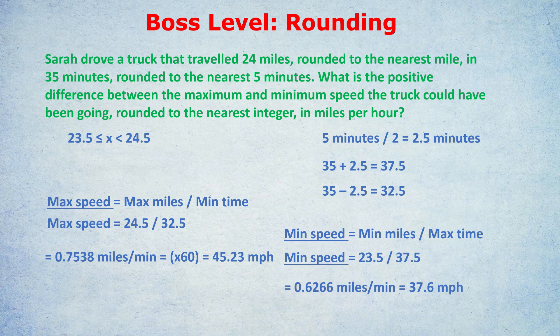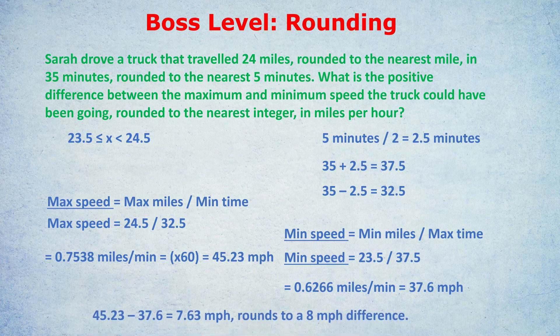Finally, they asked for the positive difference between the two speeds, rounded to the nearest integer. After subtracting to find the difference, that's 7.63. We then round that to the nearest integer, which is 8 miles per hour. So there's an 8 mile per hour difference roughly between the max speed and the min speed she could have been going.